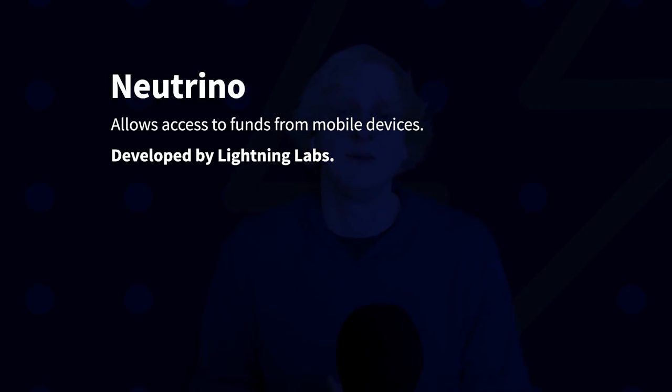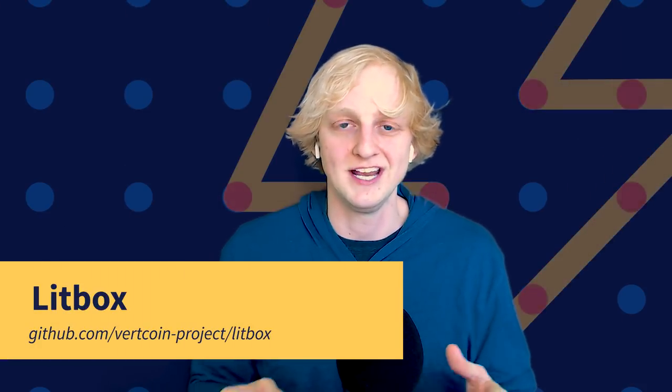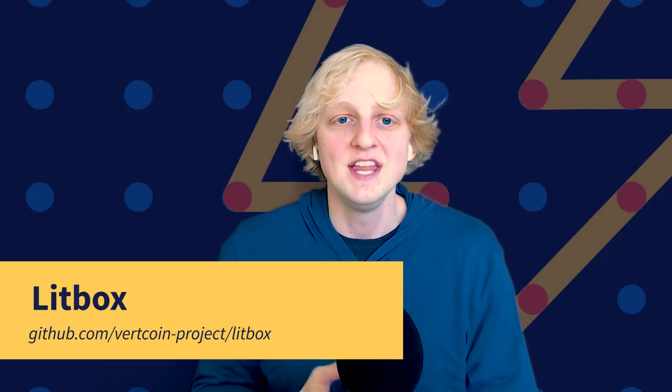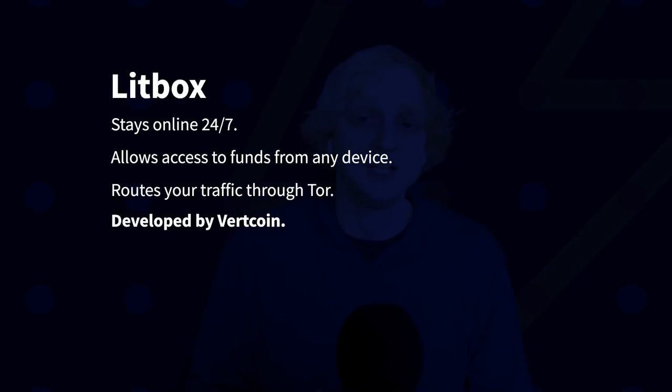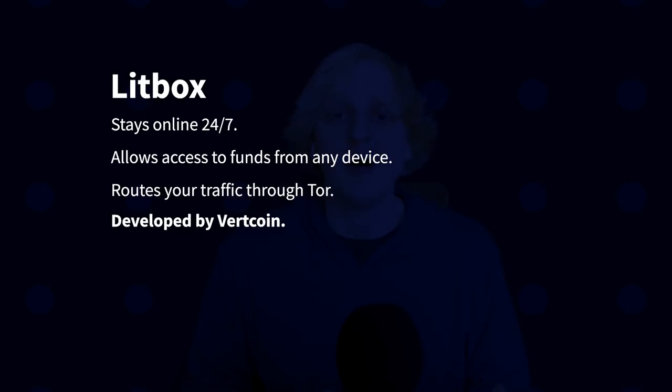Another solution being worked on is a device called Lit Box, a project the Vertcoin team is working on. It's essentially a plug-and-play device that acts as your lightning node and stays online 24/7 — you simply plug it into your router, connect with one of your devices, and you're good to go. Lit Box also routes all your traffic through Tor so your home IP address can't be linked back to your on-chain wallet addresses. Sounds pretty cool — excited to see where that one goes.